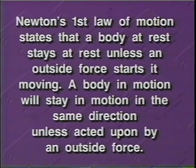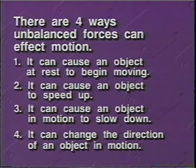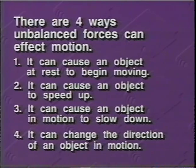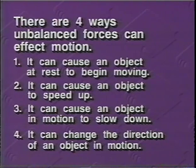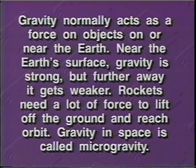An unbalanced force is any force that changes the motion of the object it acts on. There are four ways an unbalanced force can affect motion: first, it can cause an object at rest to begin moving; second, it can cause an object to speed up — for example, when a person on roller skates is pushed from behind; third, it can cause an object to slow down if acting in the opposite direction of motion; and finally, a force can change the direction of an object in motion — if a roller skater was moving in a straight line and you pulled on his sleeve, the skater would be turned toward the pull. Gravity normally acts as a force on objects on or near the Earth's surface.